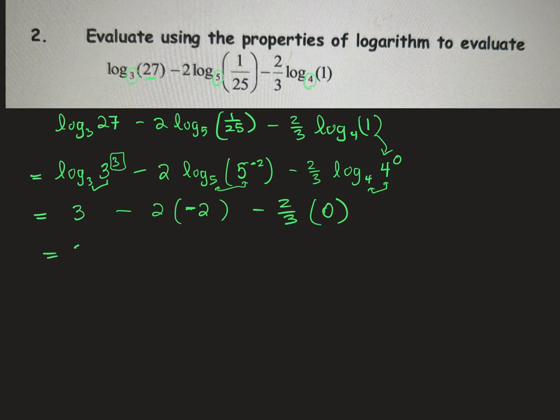And then we just simplify that. 3 plus 4 minus 0 would equal 7. And there we go. I hope that helped.